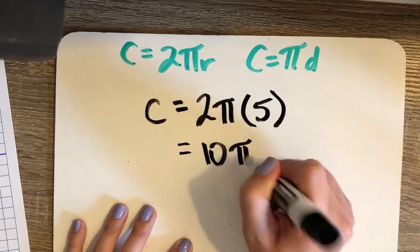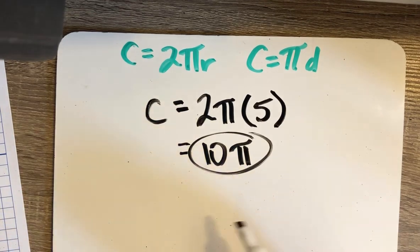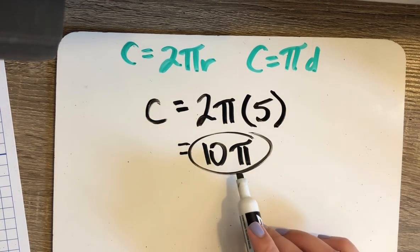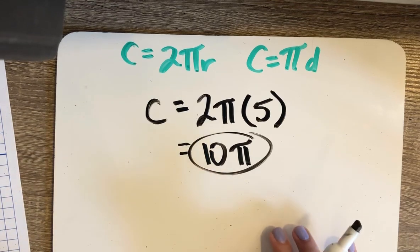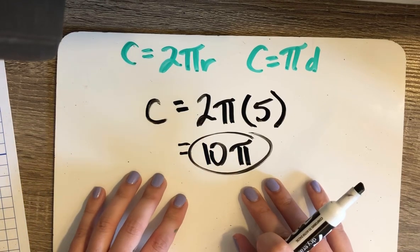And then I will just leave π after the 10. You could also go through and multiply 10 times π on your calculator and get a decimal approximation if it asks you to round to a specific value. So the circumference of the circle is 10π.